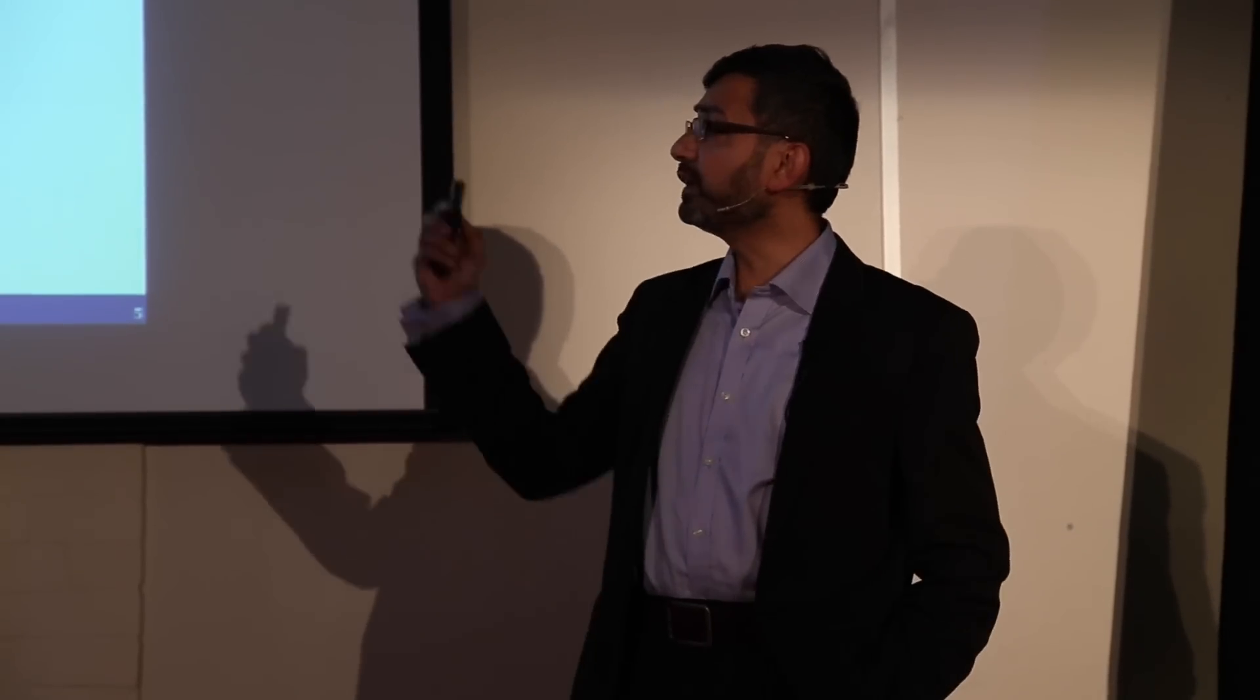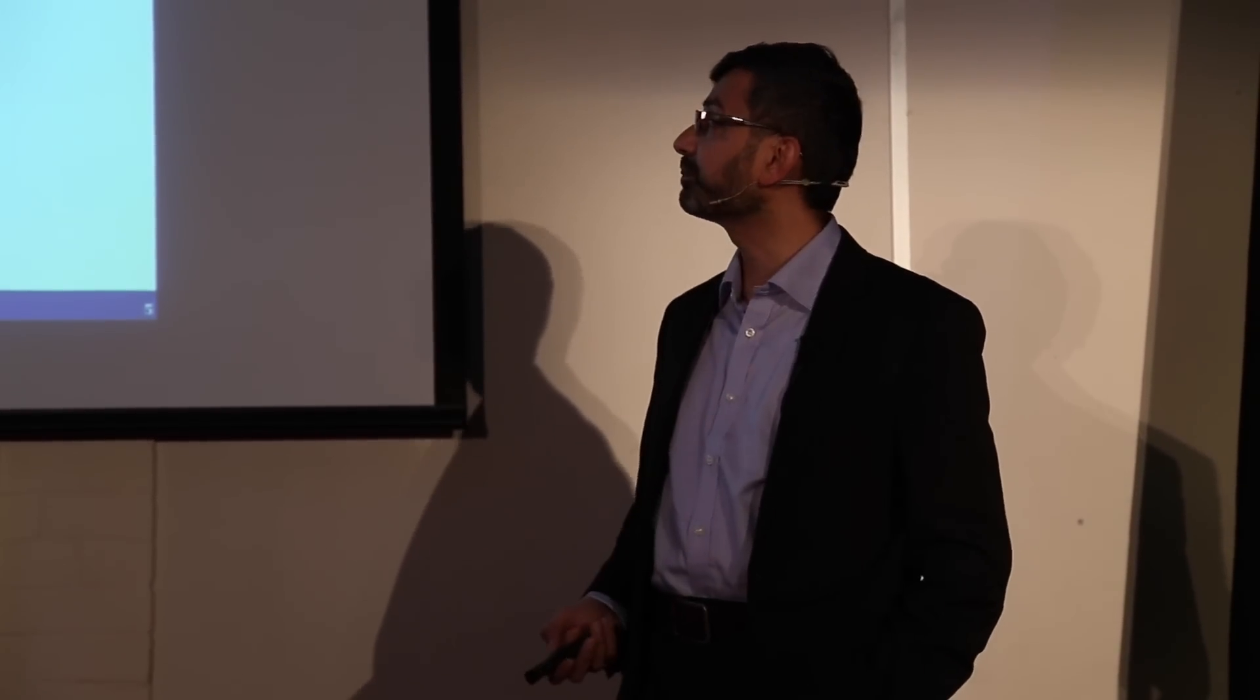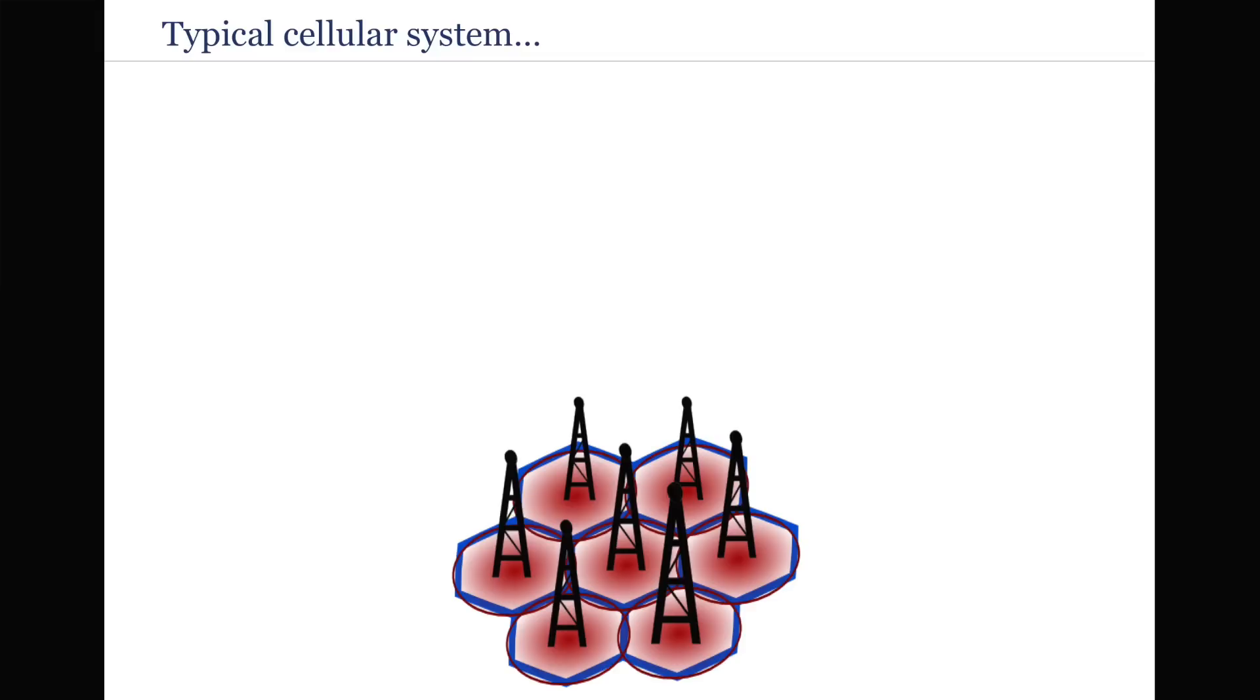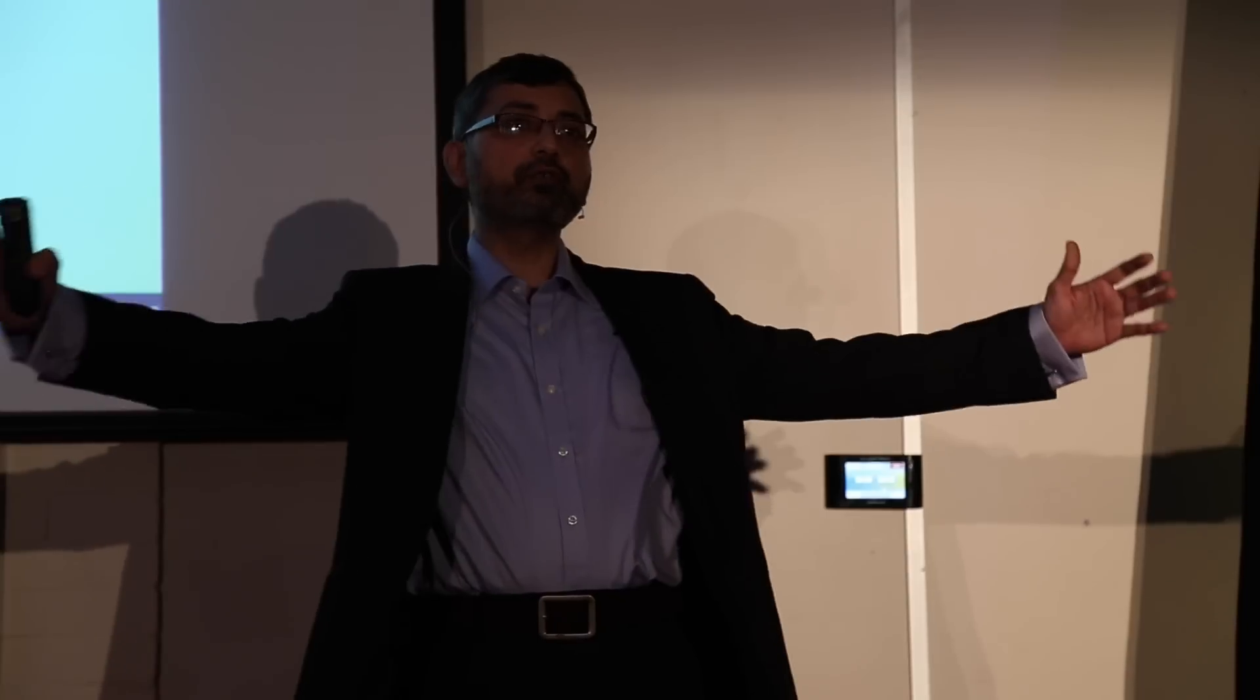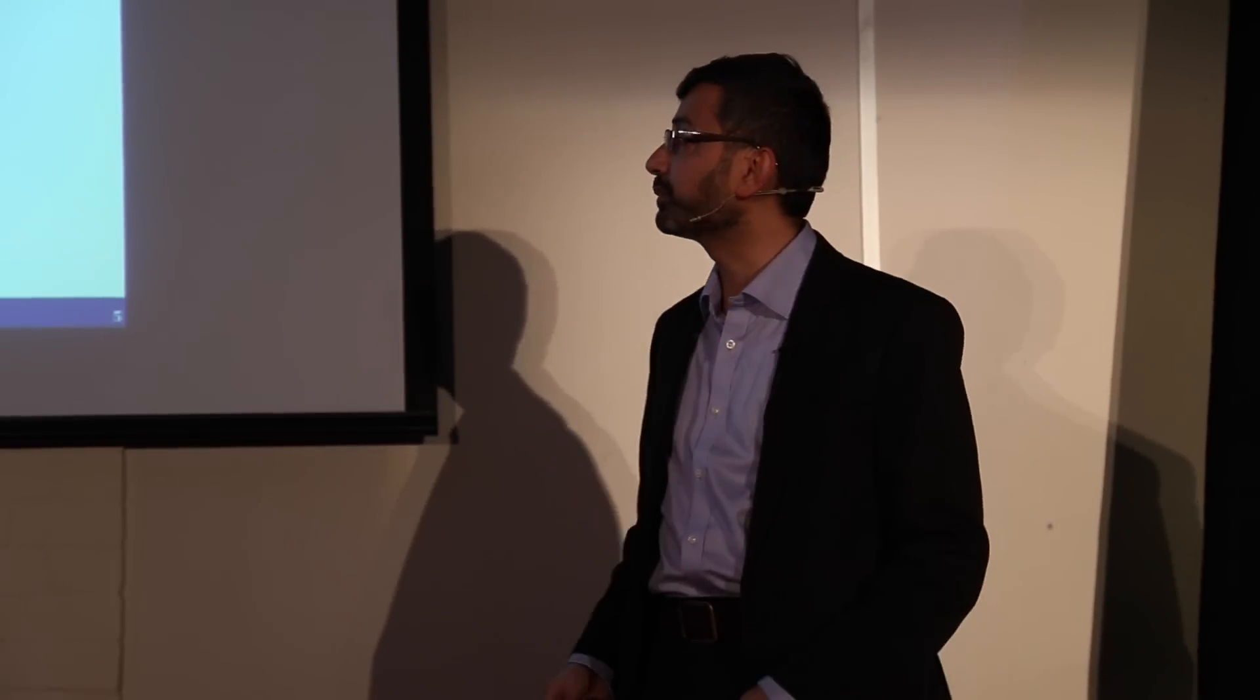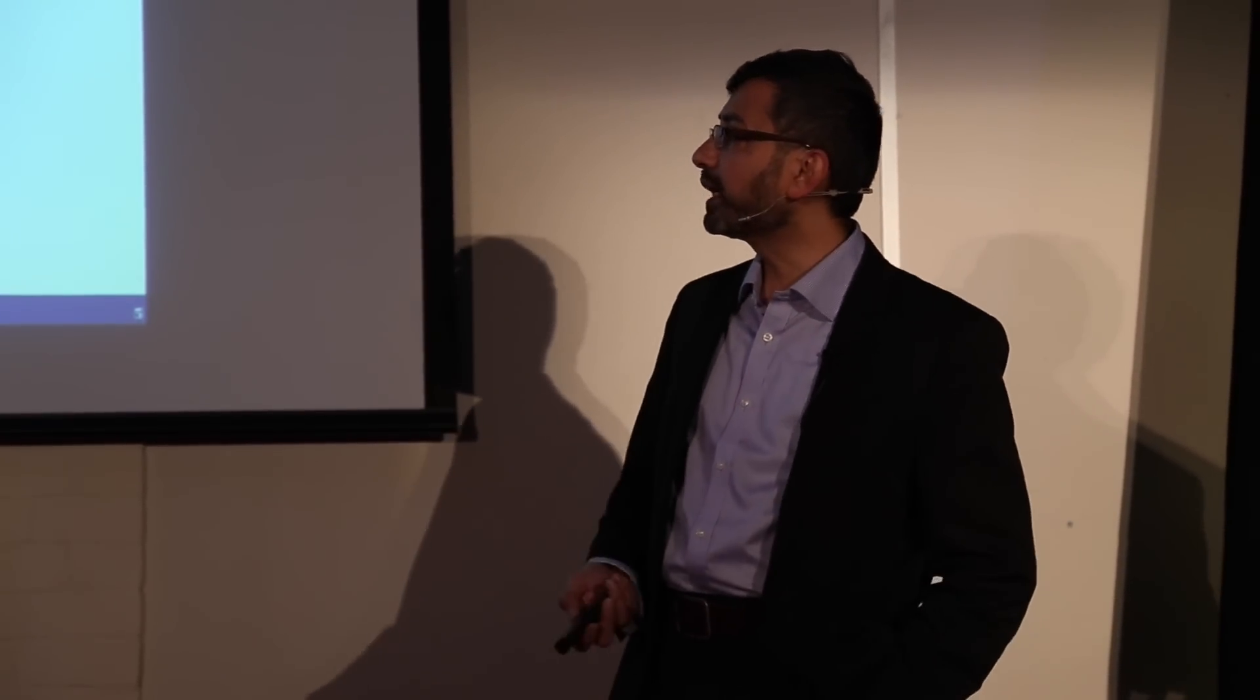So very briefly, how does a typical cellular system look like nowadays? You have a bunch of base stations which are trying to communicate with your mobile phones. Their objective is to maximize the coverage, the area that they cover, and at the same time minimize the interference that they cause to one another. So you have to maximize the capacity and the coverage at the same time.